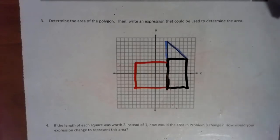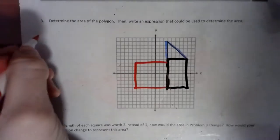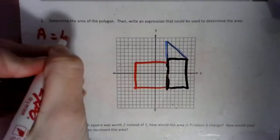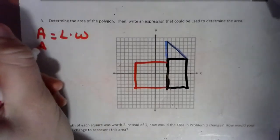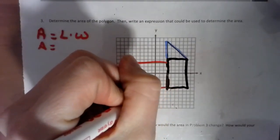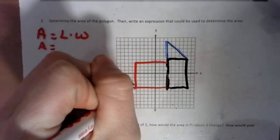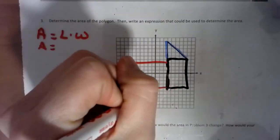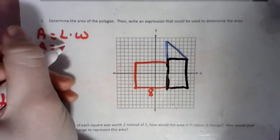So, the first one we're going to do is a red one. First thing I want to do is write area equals length times width. Area equals, and we've got to count the length, so we have 1, 2, 3, and then 1, 2, 3, 4, 5. So, 3 and 5 make a side of 8, so that's our length.